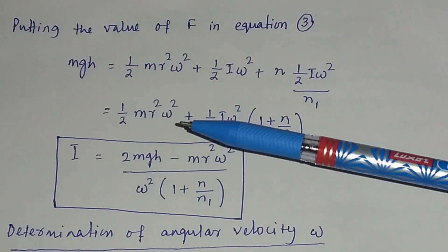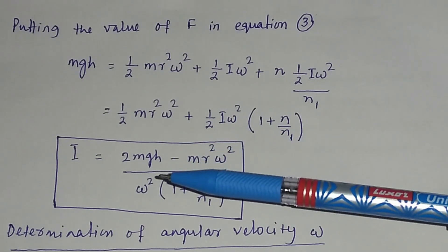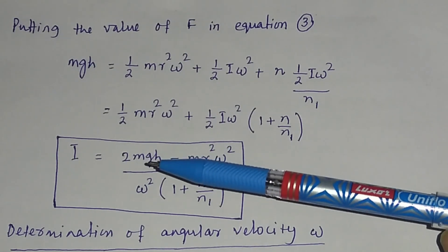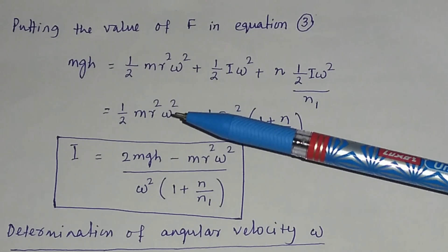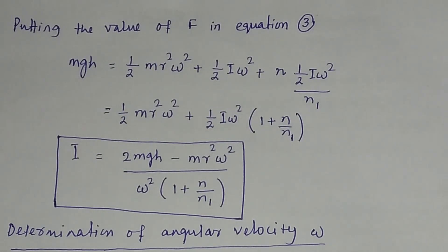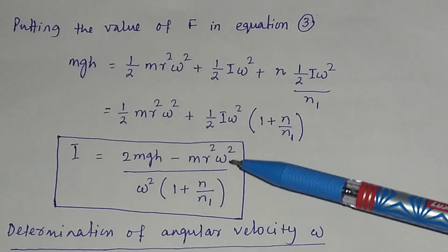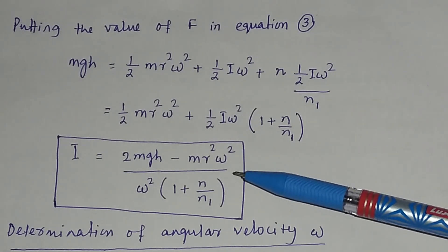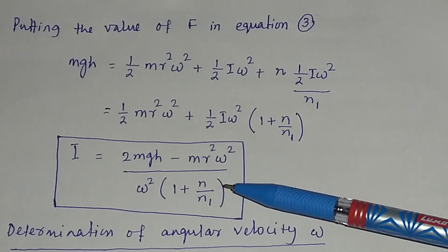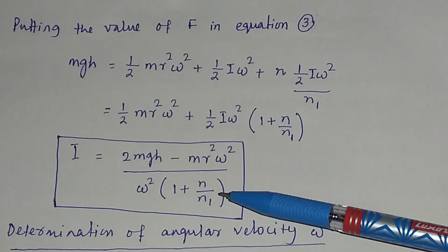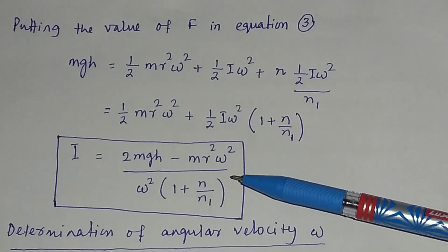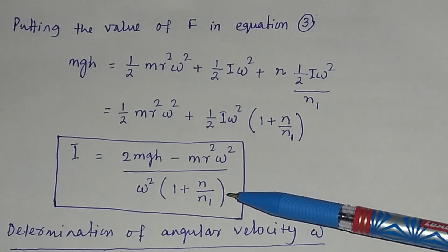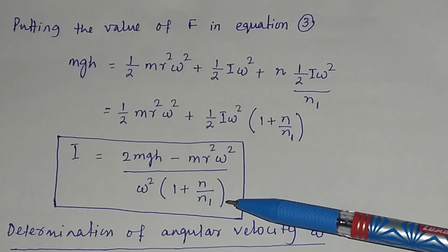You can use a mass of 500 grams, 1 kg, 1.5 kg, or 2 kg. In this experiment a mass of 500 grams was used, so m = 500 g. g is the acceleration due to gravity, h is the height of the flywheel from the ground where you detach mass m, r is the radius of the axle, ω is the angular velocity of the flywheel, n is the number of turns wound on the axle, and n1 is the number of revolutions made by the flywheel before coming to rest after the mass lands.